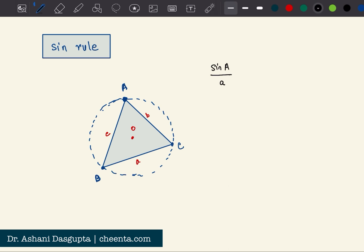So sine A by small a is equal to sine B by small b, so sine of this angle divided by small b, is equal to sine C by small c, so sine of this angle divided by small c which is the side opposite to angle C.